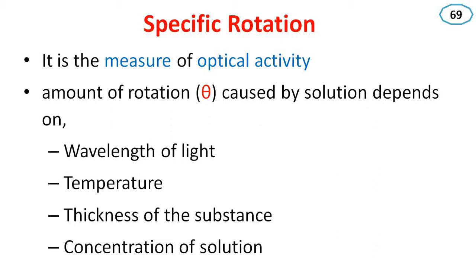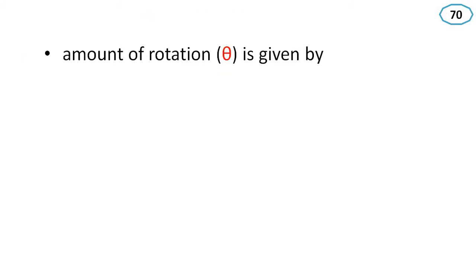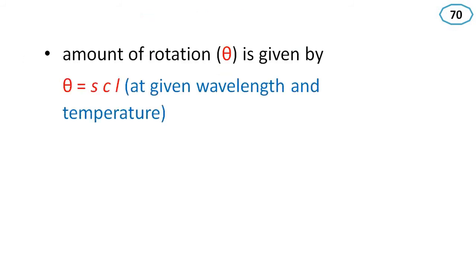The measure of optical activity, or the amount of rotation represented by theta, can be caused by different parameters. The amount of rotation is given by theta equal to S times C times L, at a given wavelength and temperature.